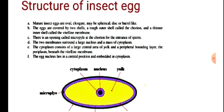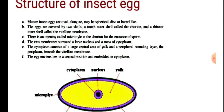Regarding the structure of insect eggs: mature insect eggs are oval, elongate, may be spherical, disc, or barrel-like. The eggs are covered by two shells — a tough outer shell called the chorion, and a thinner inner shell called the vitelline membrane. There is an opening called the micropyle at the chorion for the entrance of sperm. The two membranes surround a large nucleus and a mass of cytoplasm. The cytoplasm consists of a large central area of yolk and a peripheral bounding layer called the periplasm, beneath the vitelline membrane. The egg nucleus lies in a central position embedded in cytoplasm.